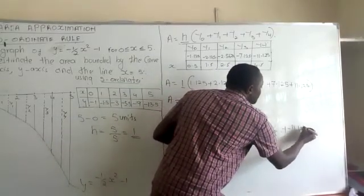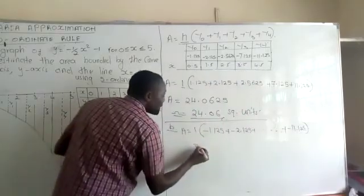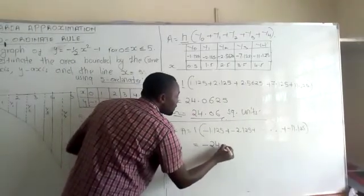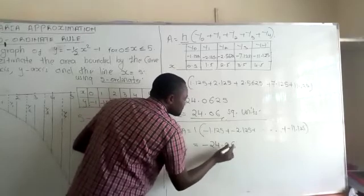Then you'll get your area as negative 24.0625.